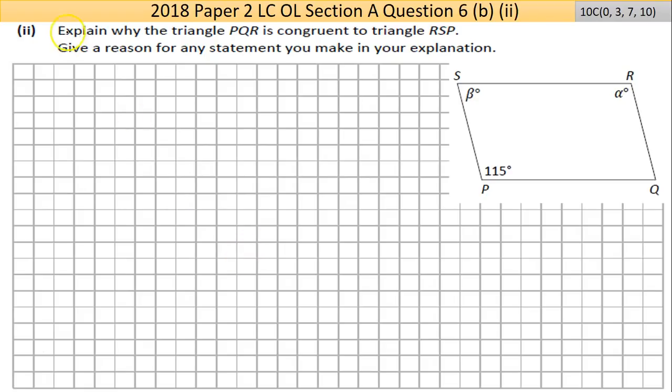Now part B part 2 here. Explain why the triangle PQR is congruent to triangle RSP. Give a reason for any statement you make in your explanation. With congruency, if you can prove that three things are equal in a triangle, then those two triangles are equal.